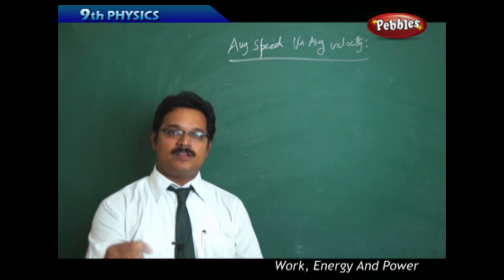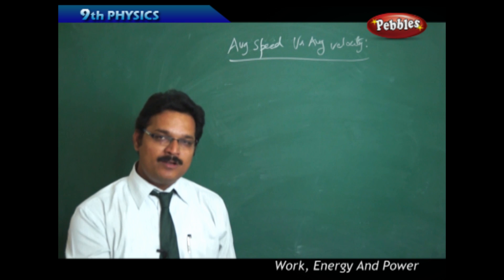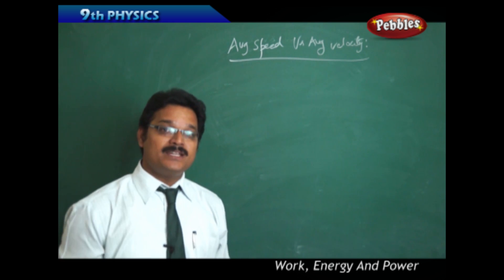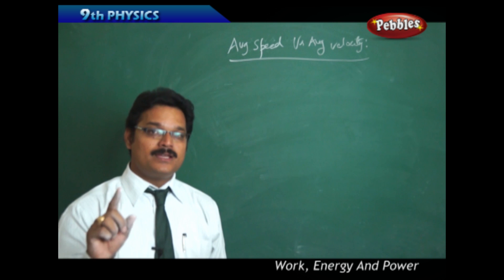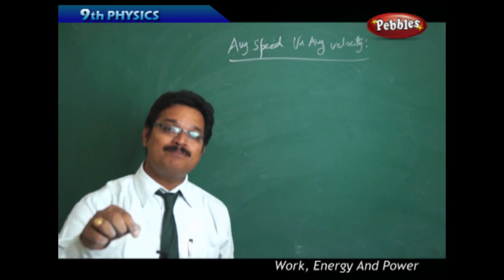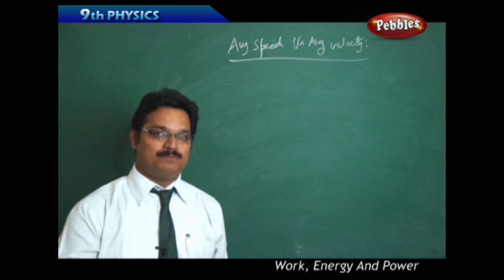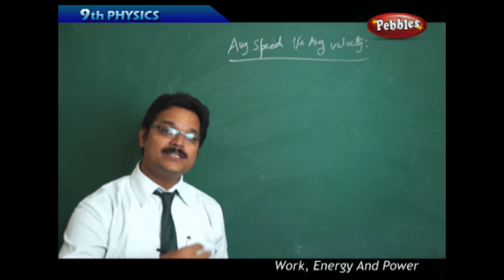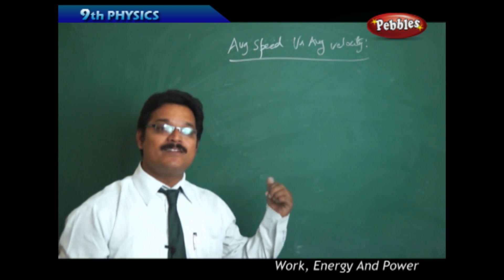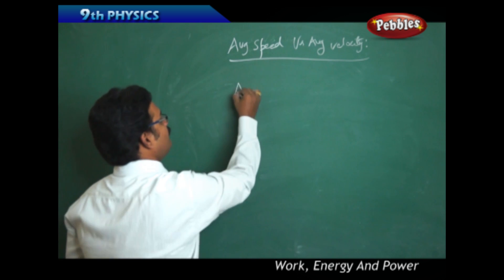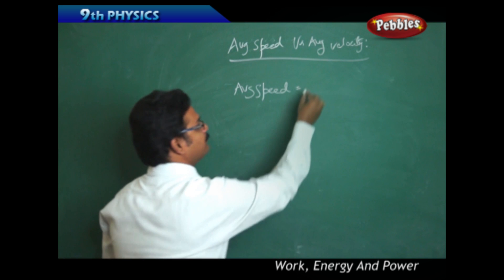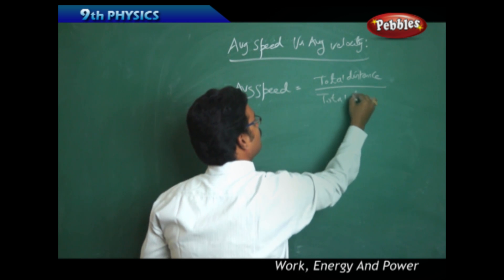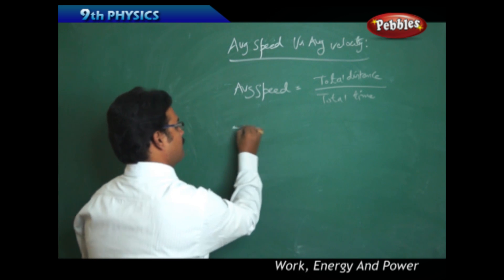If a friend asks what is the speed of your bike, and at that moment the speedometer shows 60 kmph, you say 60 kmph — you're wrong. That speed is the speed at that particular moment, called instantaneous speed. To find the actual speed, you consider all speeds together, and that becomes average speed. In physics, average speed is defined as total distance divided by total time.